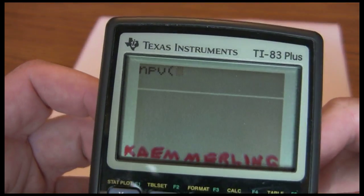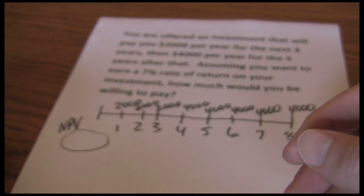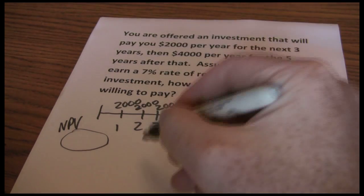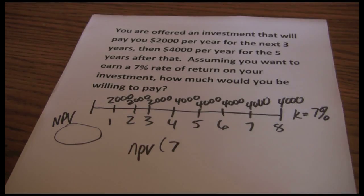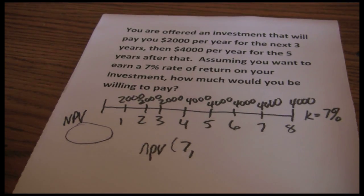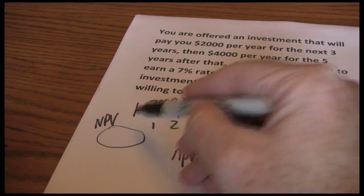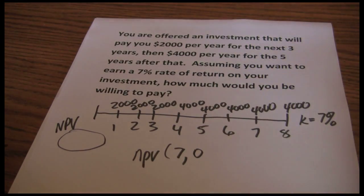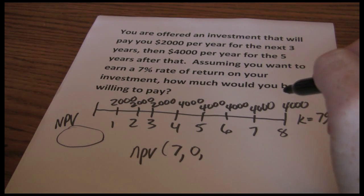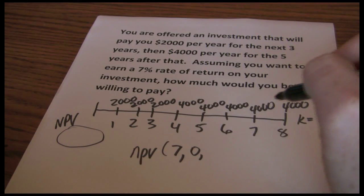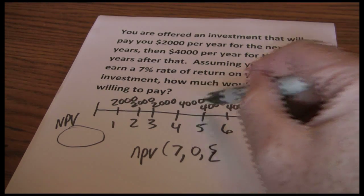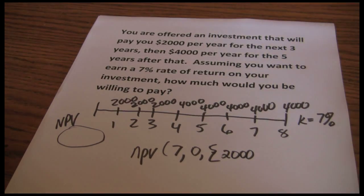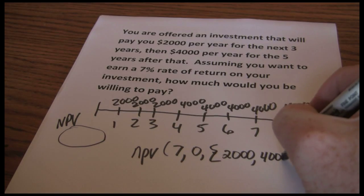We select Net Present Value. When entering NPV on the TI-83, the first input is the interest rate — that's 7% — then CF0. Notice we don't have a CF0 in this case; there's no cash flow in year zero, so we just zero that out. Next we have the cash flows. On the TI-83 and TI-84, you enter cash flows using the squiggly bracket, then put in the unique cash flows: $2,000 first, then $4,000.